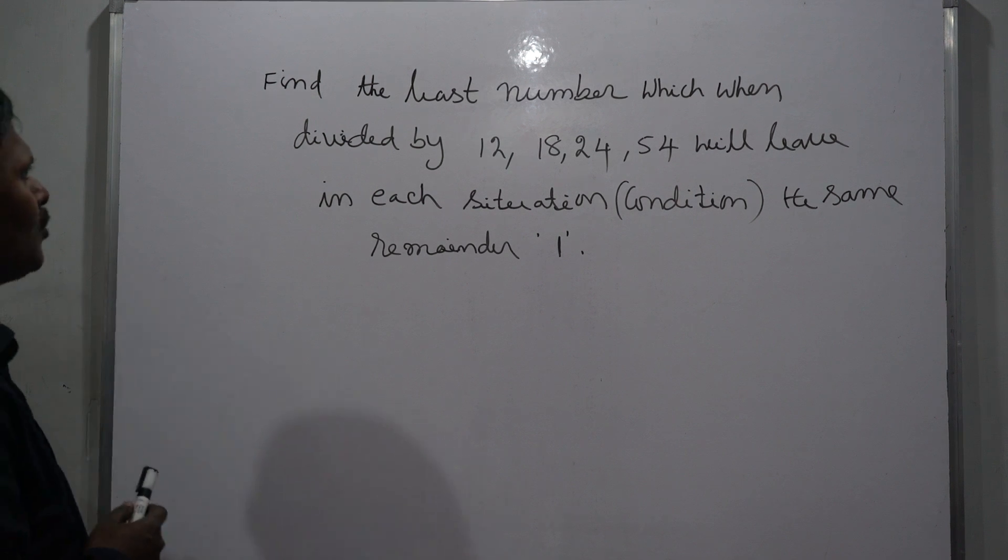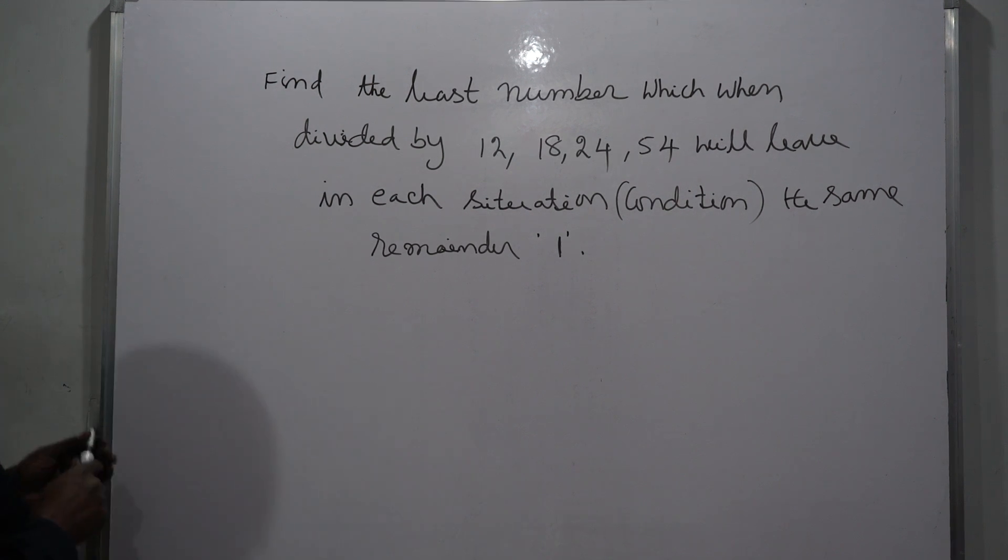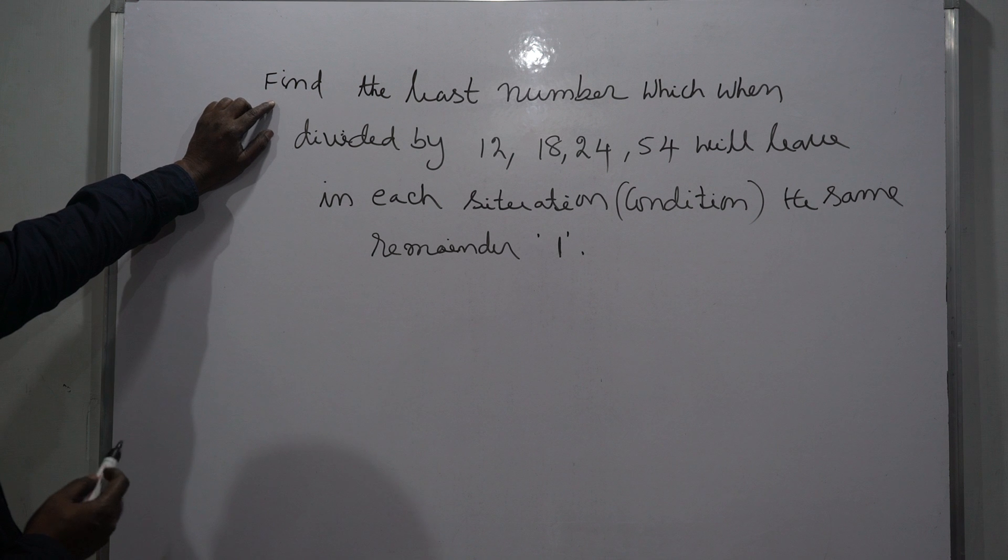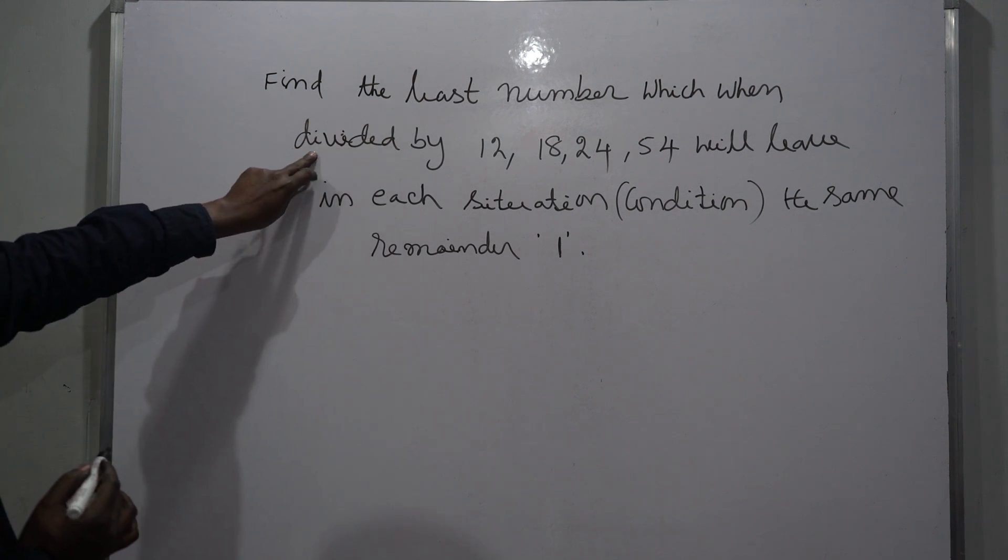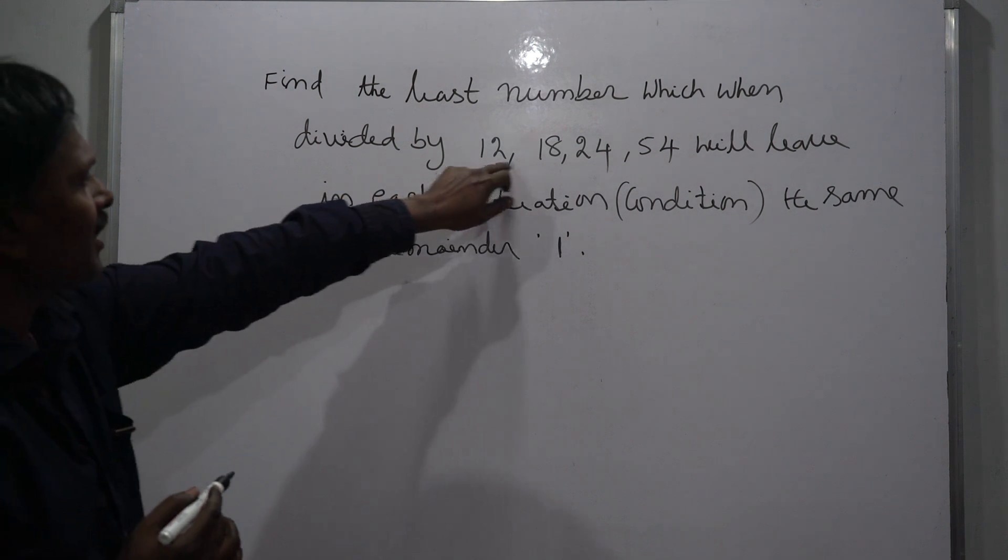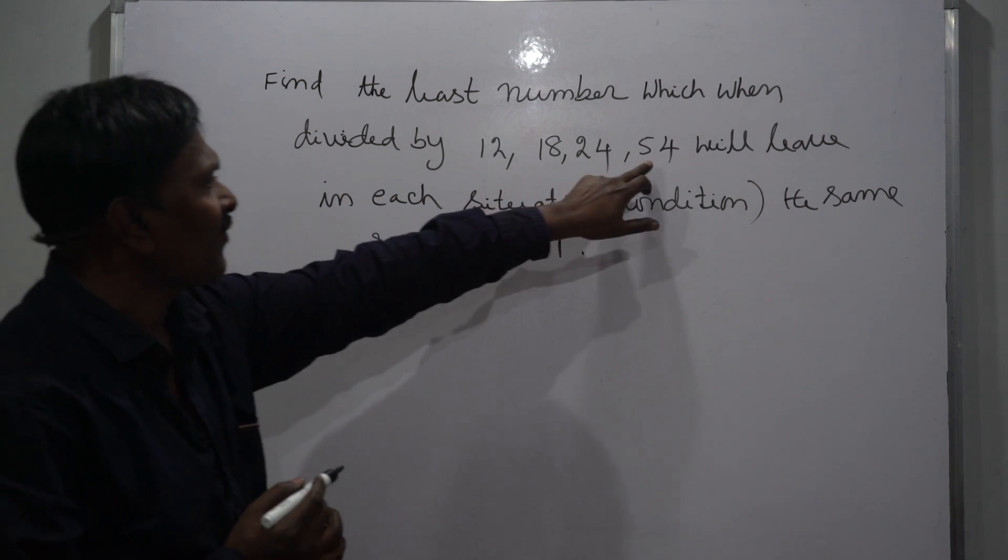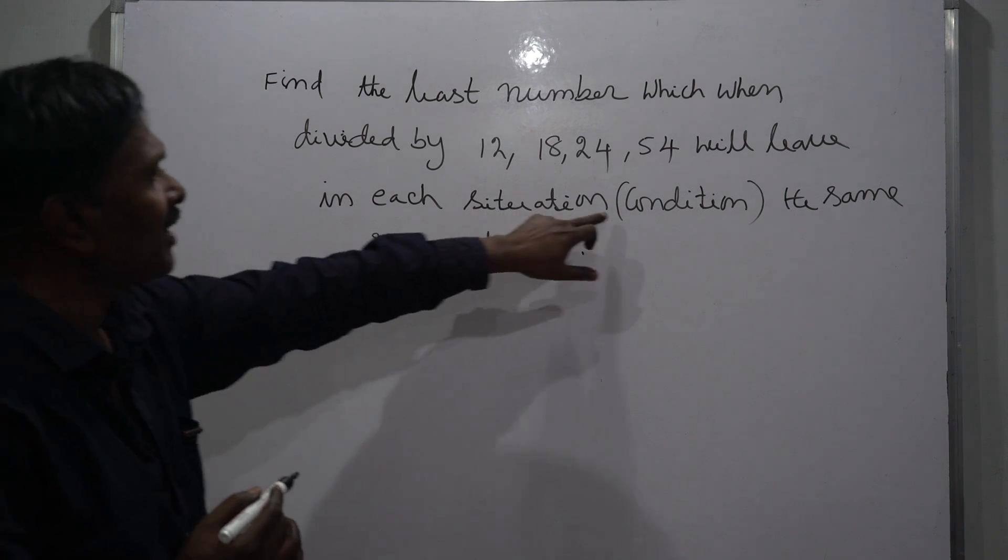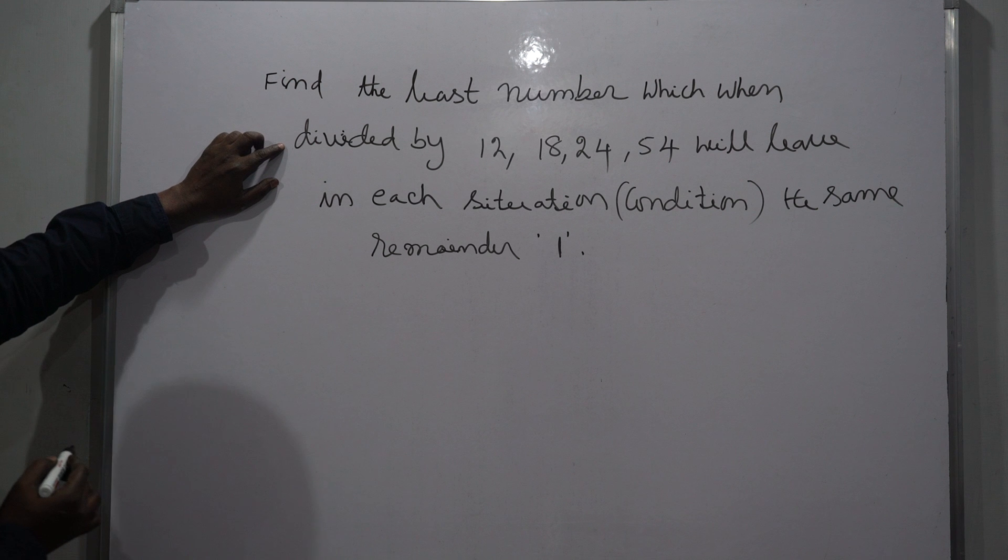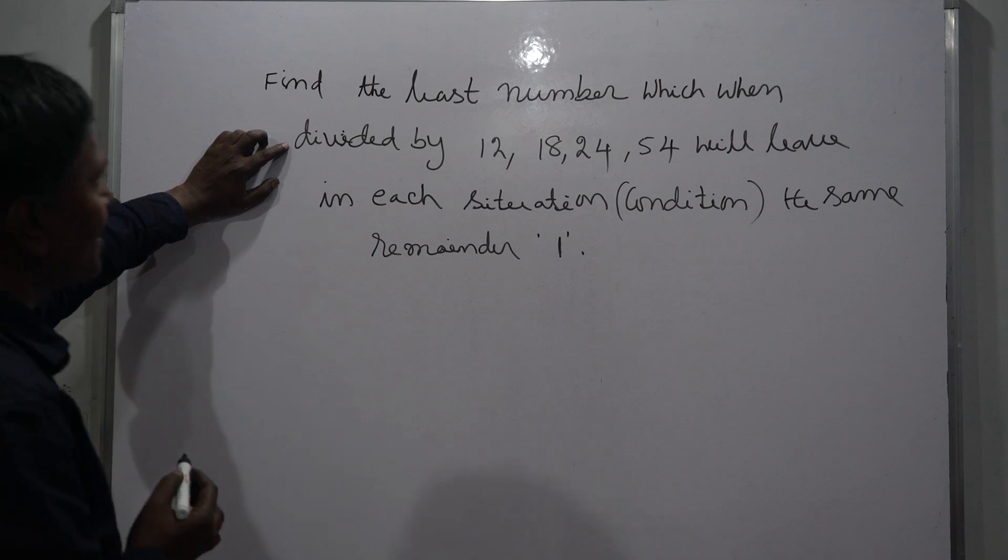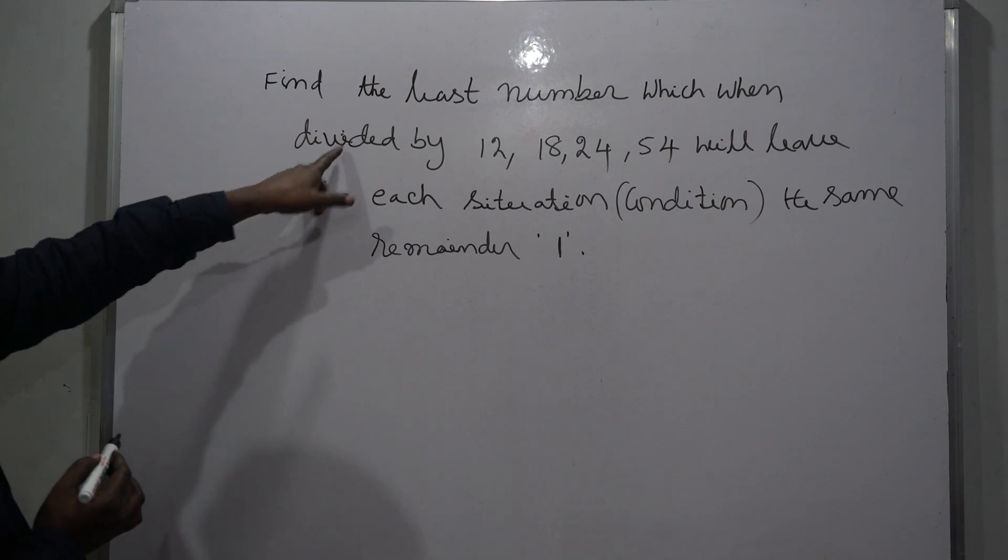Hi, this is Srinivas. Welcome to our channel, A Learning Room. See the problem: Find the least number which when divided by 12, 18, 24, 54 will leave in each situation the same remainder, 1. So it means we have to find the least number which when divided by 12, 18, 24, 54 will leave the same remainder, 1.